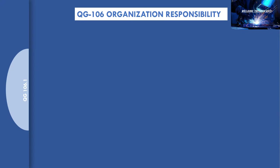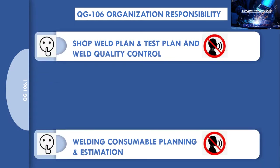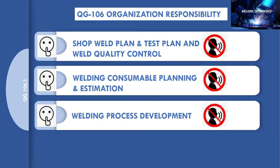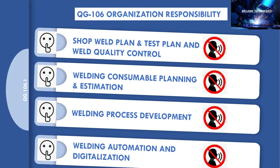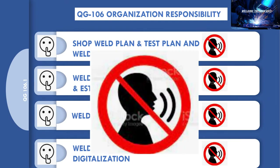Usually, the welding engineer's job description includes preparation of shop weld plan and test plan, shop weld quality control, welding consumable planning and estimation, development of new welding processes to increase productivity, welding automation and digitalization. However, ASME is silent about any of these above-mentioned activities.